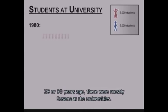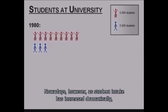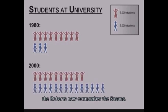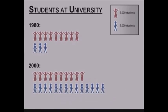20 or 30 years ago, there were mostly Susans at the universities. Nowadays, however, as student intake has increased dramatically, the Roberts now outnumber the Susans. This makes for a considerable problem which is important to tackle for any responsible modern society.